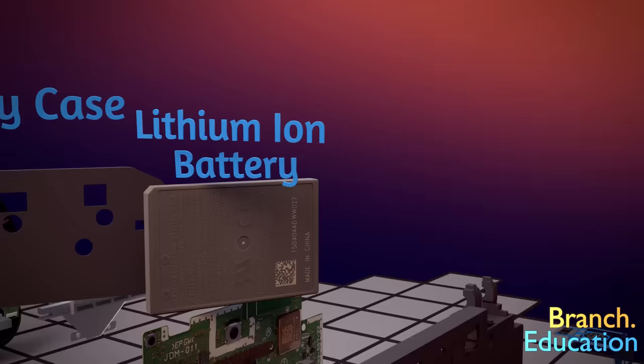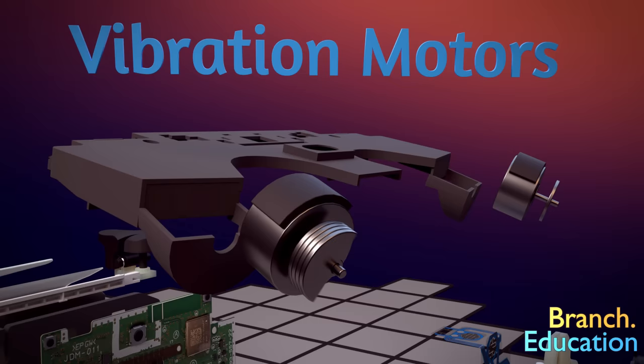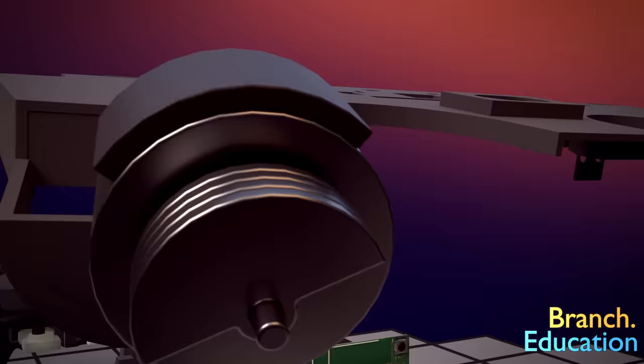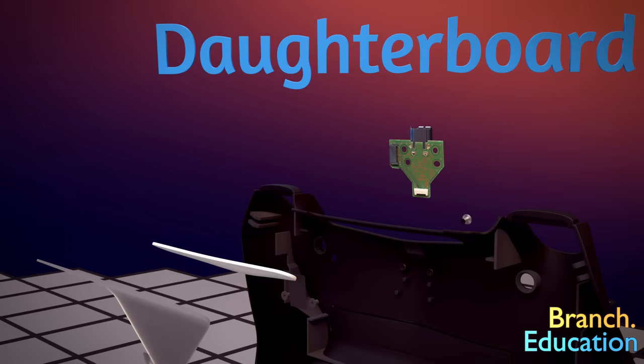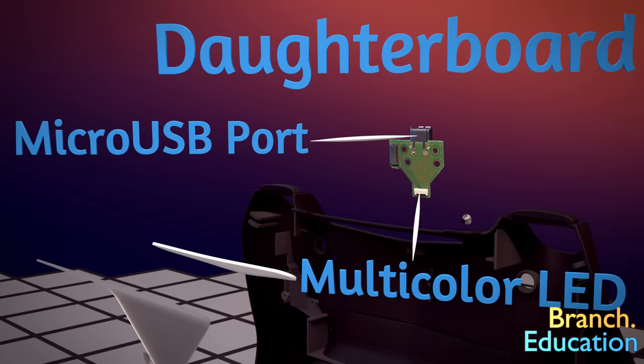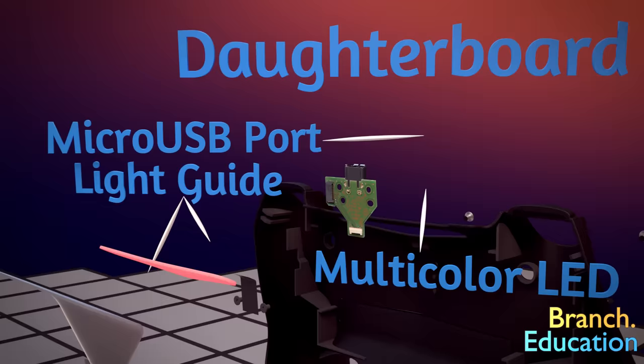Next, attached to both sides of the mid-frame are motors with off-balance weights that, when spun up, cause the controller to vibrate. Finally, attached to the back plastic housing, we have an additional printed circuit board or daughter board that holds the micro USB port and a multi-color LED with a set of plastic pieces that guide and disperse the light in order to illuminate the controller's triangular light.